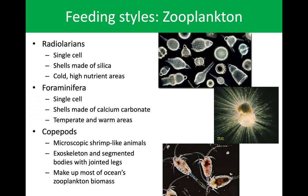Foraminifera are single-celled organisms with calcium carbonate shells. So these guys are also in danger when we're thinking about ocean acidification. They live in temperate and warm areas — the same regions as those coccolithophores. We can anticipate some pretty large shifts to these regions of the globe with warming and ocean acidification.